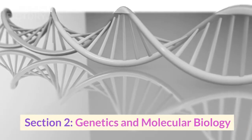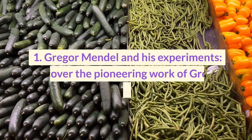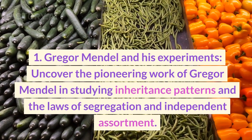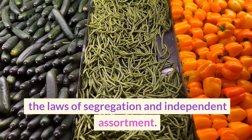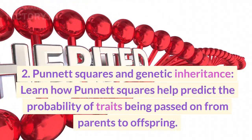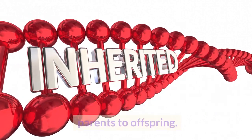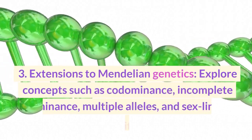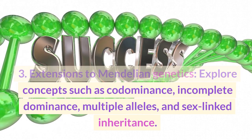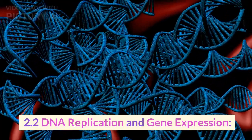Section 2: Genetics and Molecular Biology. 2.1 Mendelian Genetics. 1. Gregor Mendel and His Experiments — uncover the pioneering work of Gregor Mendel in studying inheritance patterns and the laws of segregation and independent assortment. 2. Punnett Squares and Genetic Inheritance — learn how Punnett Squares help predict the probability of traits being passed on from parents to offspring. 3. Extensions to Mendelian Genetics — explore concepts such as codominance, incomplete dominance, multiple alleles, and sex-linked inheritance.